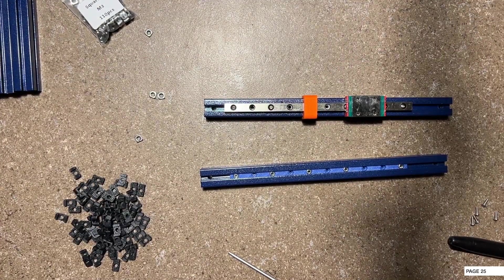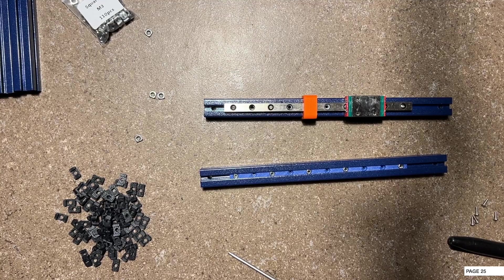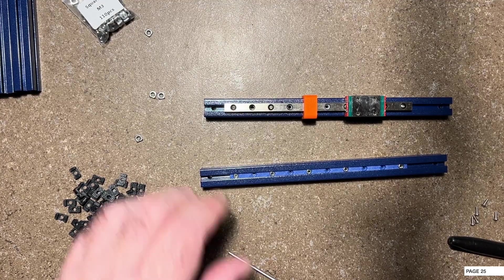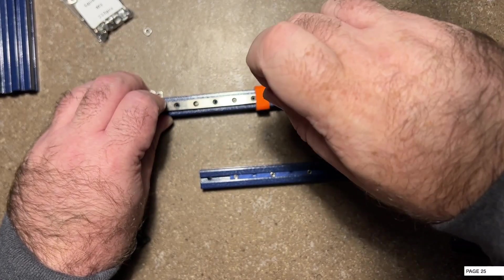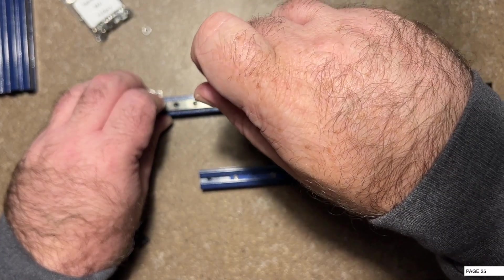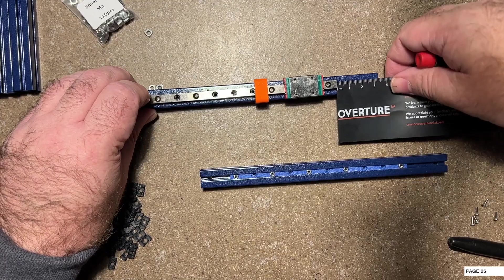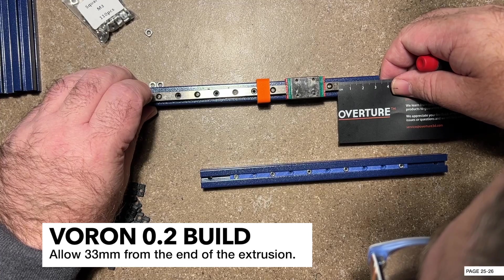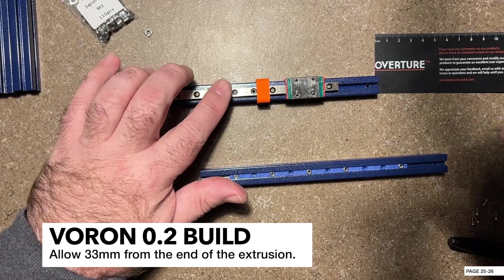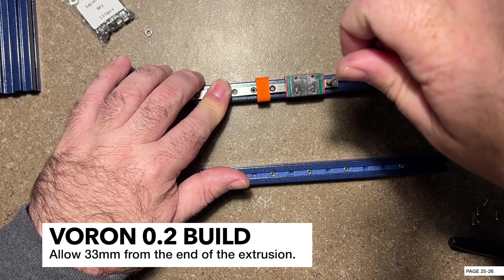We basically want to get about 33 millimeters from the end, from the top. It doesn't really matter which side's the top. I'm going to loosen these up, make sure I can move them. They shouldn't be very tight. Now I'm just going to move them just a smidge. Okay, that's 33. Going to hold it and tighten it down.